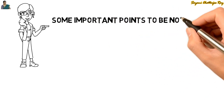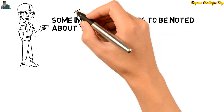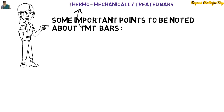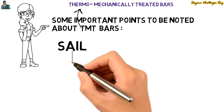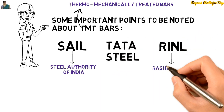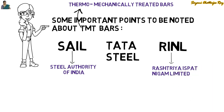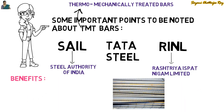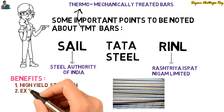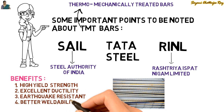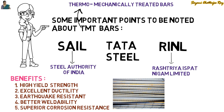Now we will see some important points about TMT bars. TMT is the abbreviated form of Thermo Mechanically Treated bars. TMT steel is the new generation high strength steel having superior properties compared to common HYSD bars. In India, SAIL (Steel Authority of India Limited), Tata Steel, and RINL (Rashtriya Ispat Nigam Limited), popularly known as Vizag Steel, are producing TMT bars. Benefits of TMT bars include very high yield strength, excellent ductility, earthquake resistance, better weldability, and superior corrosion resistance.